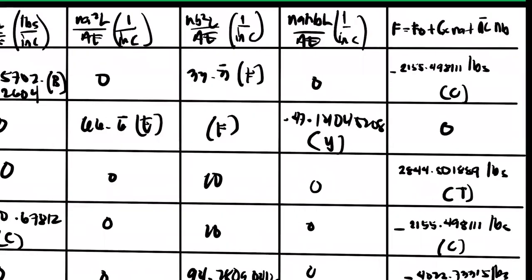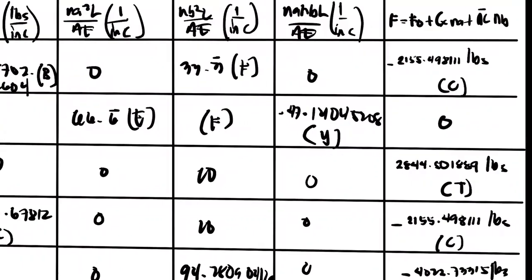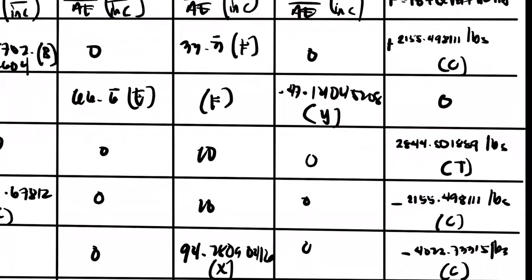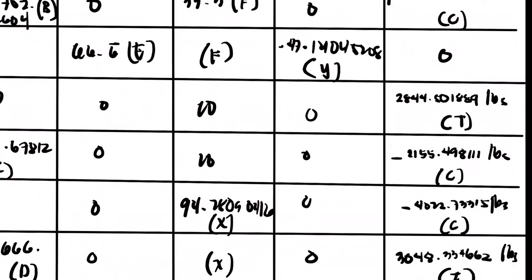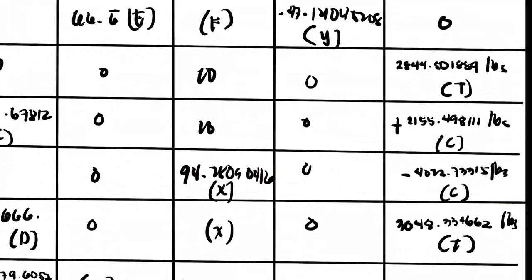So the indication of negative is compression. When stating it positively to get the positive value, compression is your indication. So you can write or you need to write on your paper: 2155.49811 pounds compression, 2844.501889 pounds tension, 2155.49811 pounds compression, and 4022.733315 pounds compression.